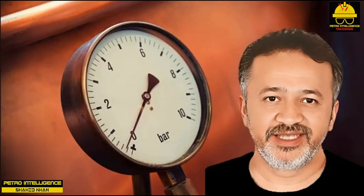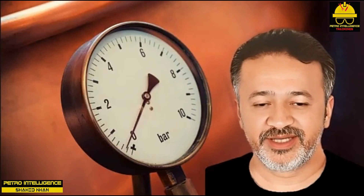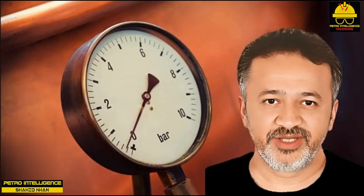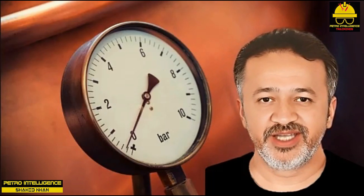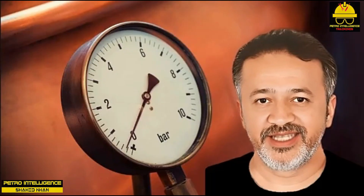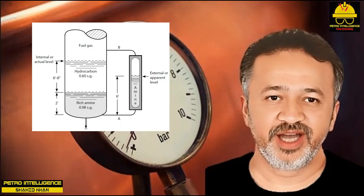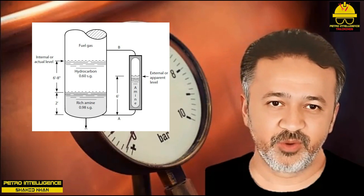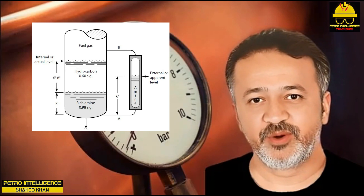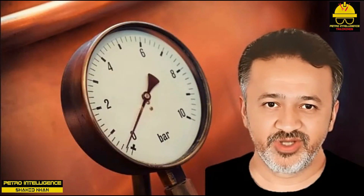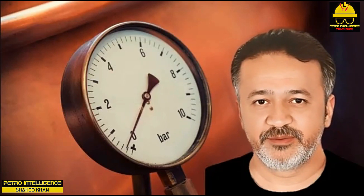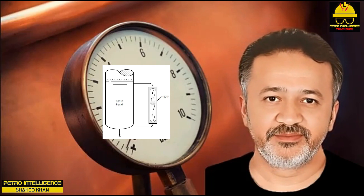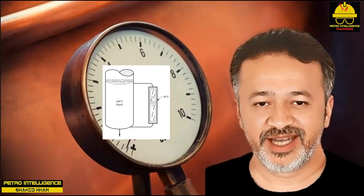For example, suppose the height of hydrocarbon liquid in a gauge glass is four feet between the level taps, the glass temperature is 60°F, and the tower temperature is 560°F. The temperature difference is 500°F. Applying the rule: 500 × (5/100) ÷ 100 = 25%, meaning the liquid in the gauge glass is 25% denser than in the tower. Therefore the liquid level in the tower above the bottom tap is (1 + 25/100) × 4 = 5 feet — the tower liquid is one foot above the level shown in the glass.